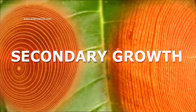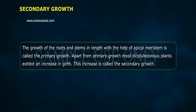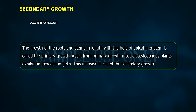Secondary Growth. The growth of roots and stems in length with the help of apical meristem is called primary growth. Apart from primary growth, most dicotyledonous plants exhibit an increase in girth. This increase is called secondary growth.